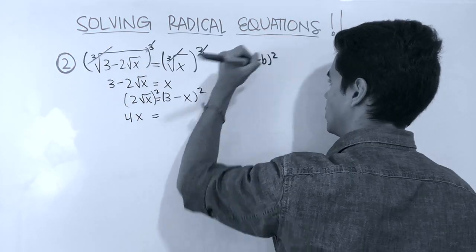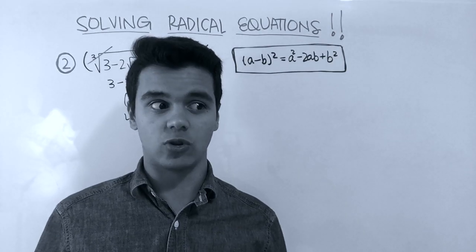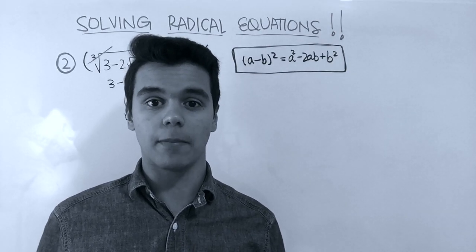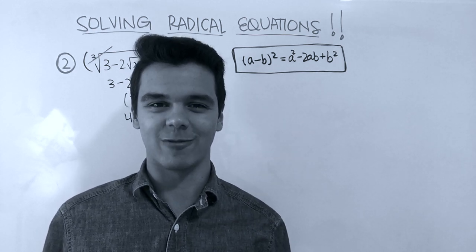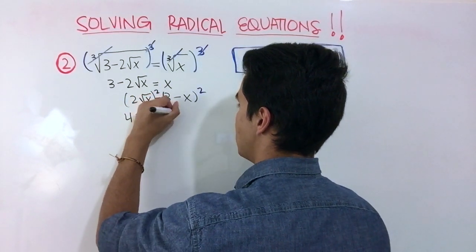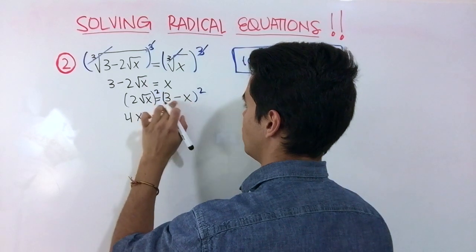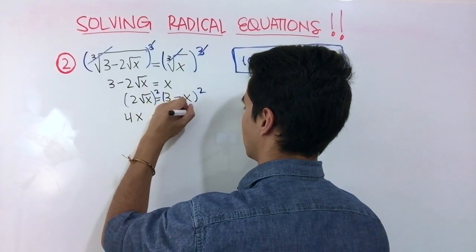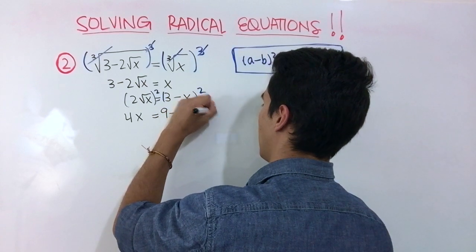The difference of two numbers squared equals the first number squared minus 2 times the first number times the second number plus the second number squared. So this would be 9 minus 2 times 3 times x, which is 6x, plus x squared.